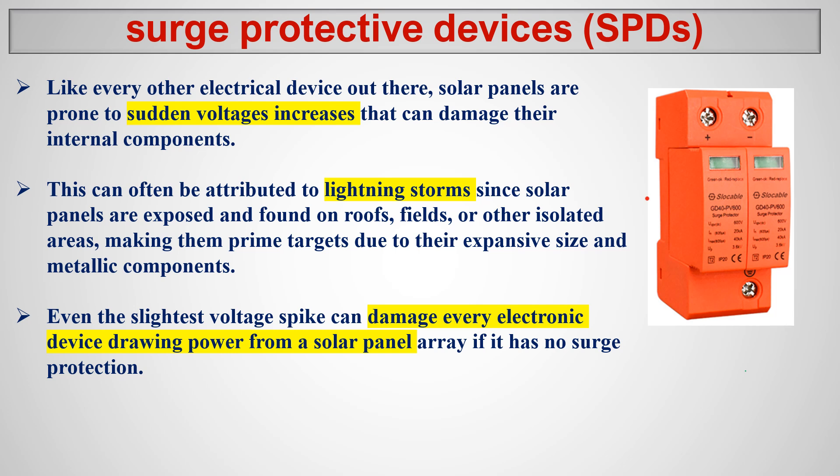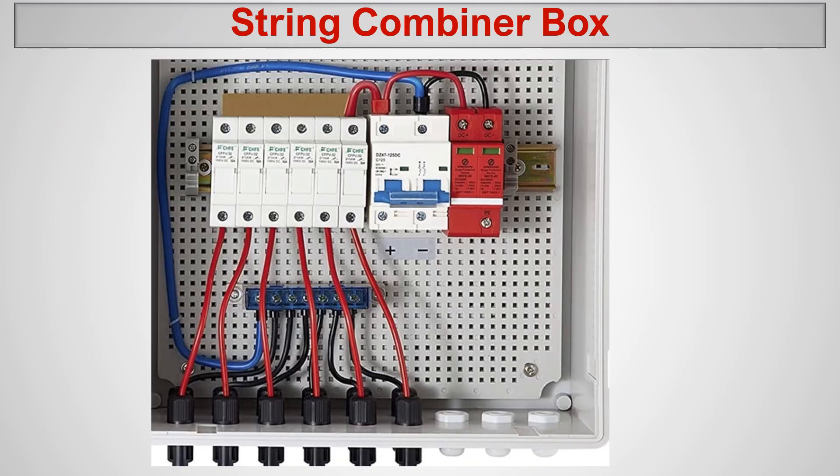A surge protection device protects the system from sudden voltage rises that can damage internal components. This can be attributed to lightning storms — typically thousands of volts can appear in the system. It's a very rare incident, but we need to protect the system from that. High voltage suddenly damages electronic components, and the inverter is also an electronic component, which is why we use protection devices.